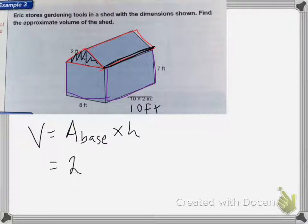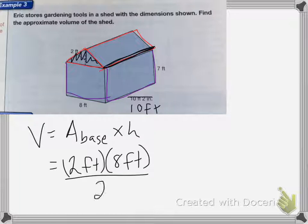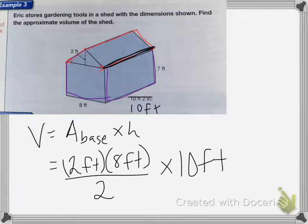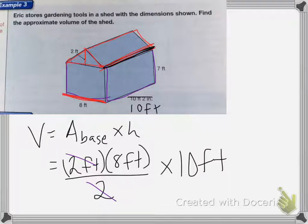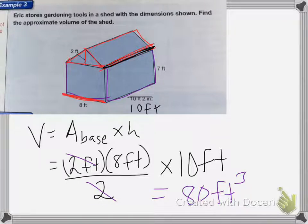The area of the base is going to be 2 feet times 8 feet, divided by 2. The height of my object is going to be that 10 feet. The height of my triangle is 2 feet, and the base of the triangle is the same as the base of the rectangular prism, which is 8 feet. The height is the long side, which is 10 feet. The 2's can cancel, so I'm going to do 8 feet times 10 feet, which equals 80 feet cubed. So the volume of the top triangular portion is 80 feet cubed.